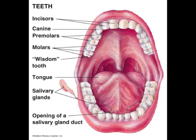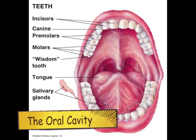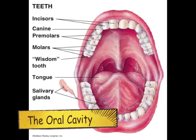Digestion starts in the mouth, where food is chewed by teeth. Here, saliva mixes with the food. The salivary glands then release amylase, which targets complex carbohydrates and breaks them into disaccharides and trisaccharides.